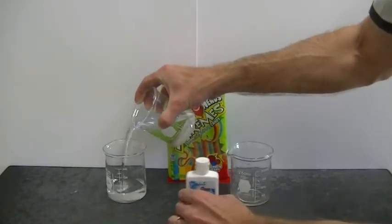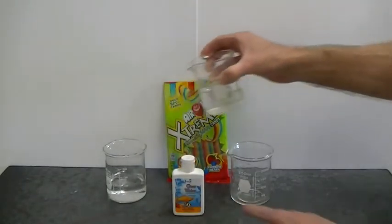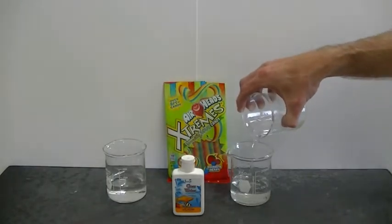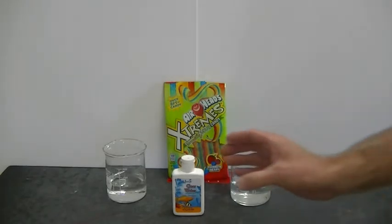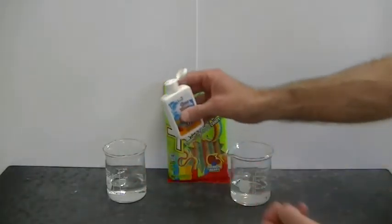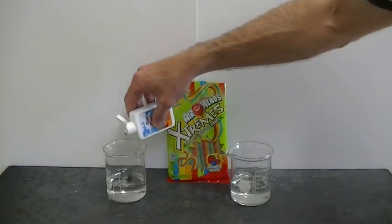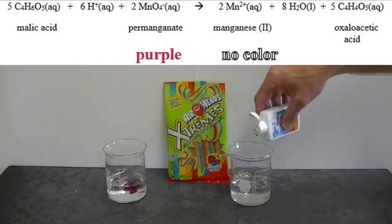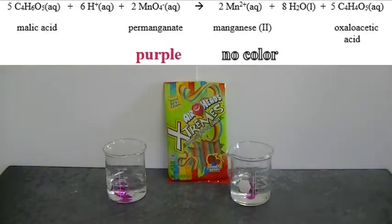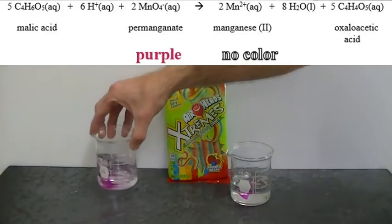I'm going to take some potassium permanganate solution found in this jungle brand clear water aquarium treatment. Potassium permanganate is purple in color, and what's interesting is malic acid will react with the potassium permanganate and change the color to colorless through a chemical reaction.